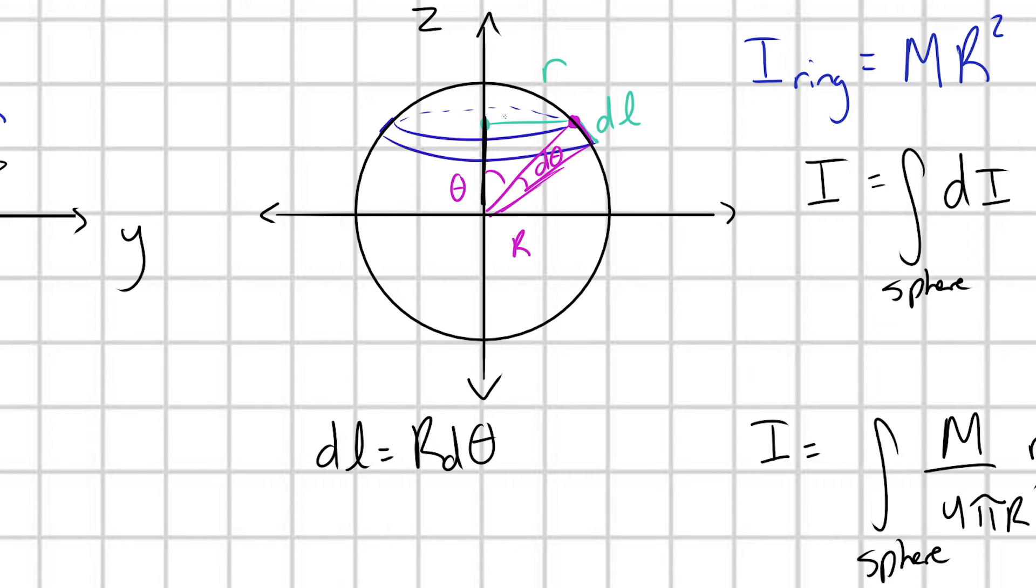So, oh my goodness, look, we already have a triangle here. We have a triangle with some angle theta, some hypotenuse capital R, and this leg here, little r. So what's little r going to be? r is just going to be equal to capital R sine theta. Great.